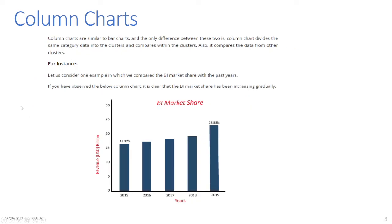Column Charts: Column charts are similar to bar charts. The key difference is that a column chart divides the same category data into clusters and compares within those clusters, and also compares data from other clusters. For instance, in one example comparing BI market share with past years, the below column chart clearly shows that BI market share has been increasing gradually.